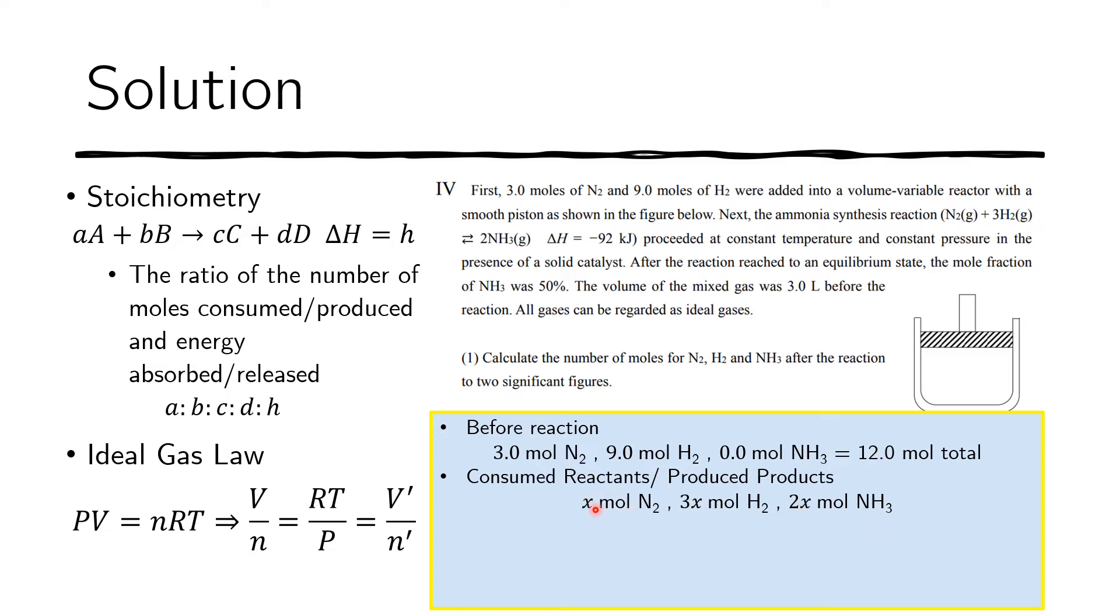So now we can compute the amount of these reactants and products after the reaction. For the reactants we just subtract. We had 3 before the reaction, then we consumed x, so we're left with 3 minus x moles of nitrogen, 9 minus 3x moles of hydrogen, and we have 2x moles of ammonia because ammonia is produced. The total number of moles of ideal gas is 3 minus x plus 9 minus 3x plus 2x, so that's 12 minus 2x moles in total.